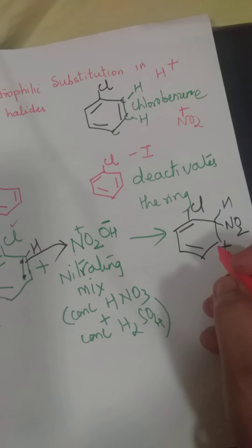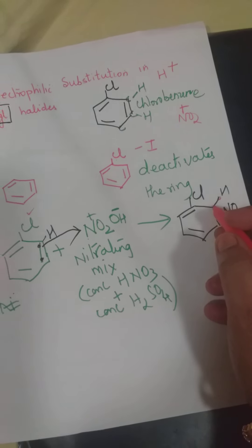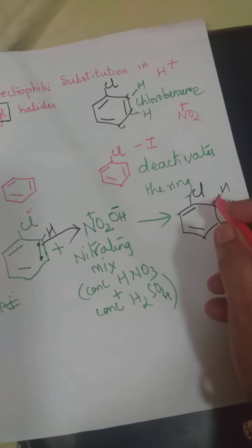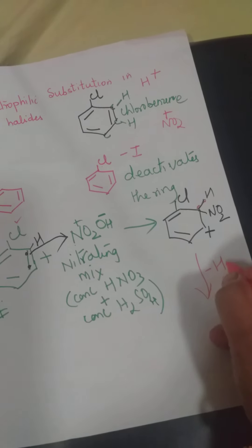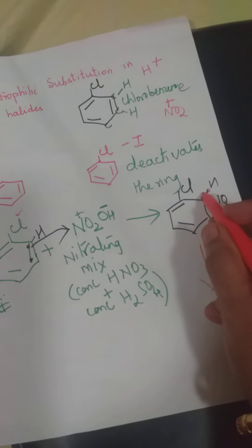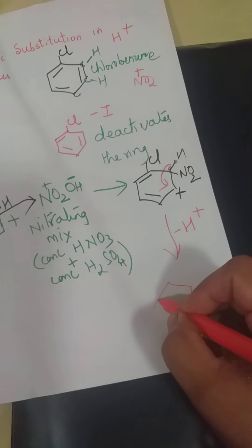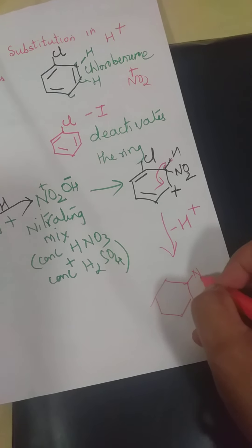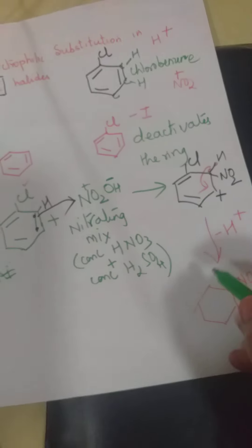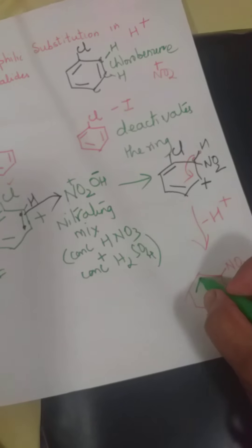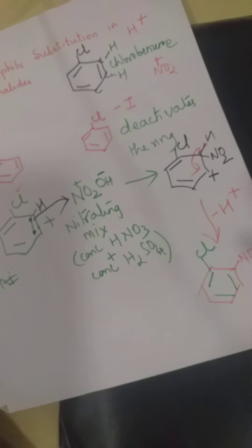Aap kya hota hai, yahan positive charge hai, yeh zyada der tak nahi reh sakta hai, therefore this hydrogen, yeh bond mein bhi aapko pata hai, do electron hai, this hydrogen will leave its electrons, and go as H plus, toh woh kaise nikalega? Minus H plus, toh yeh dono electron jo hai, woh yahan pe phir se shift ho jayega, iske wajah se, you are going to get, yahan pe NO2. Yeh jo electron pair hai, wapas aa gaya, toh yahan abhi aapko apna bond mil gaya, baaki sab apne jagah pe, as it is.